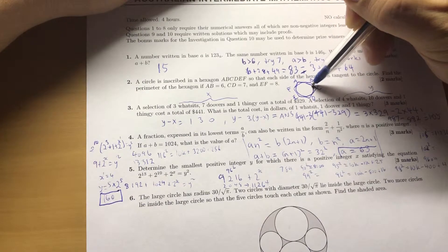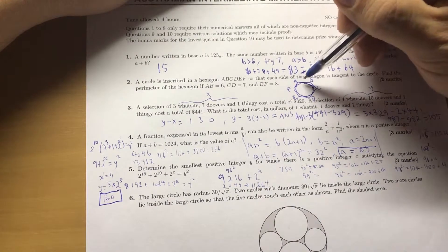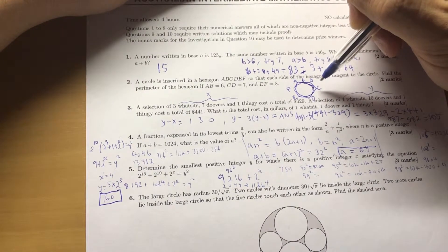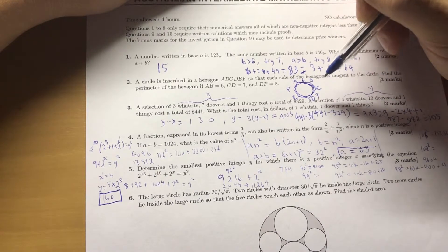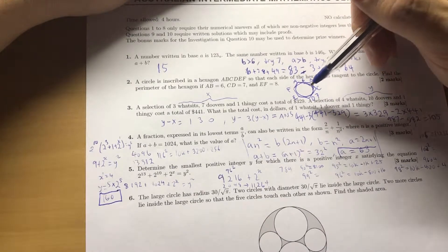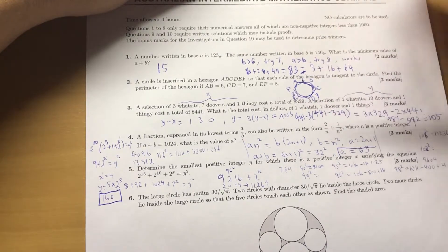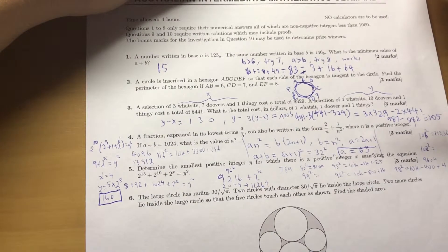Ah, it's not touching. Oh, is it touching there? A, B is 6, C, D is 7, E, F is 8. Find the perimeter of the hexagon.